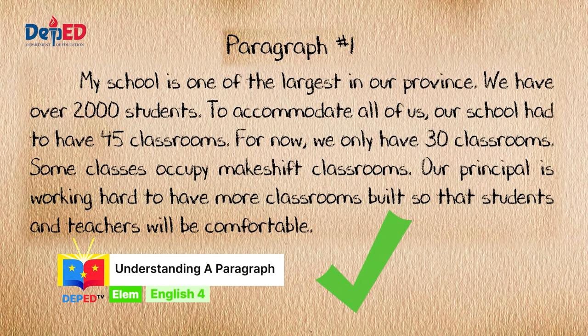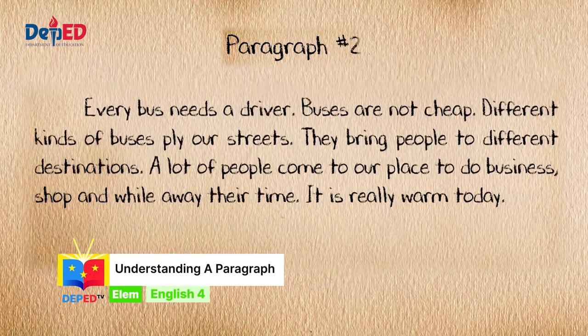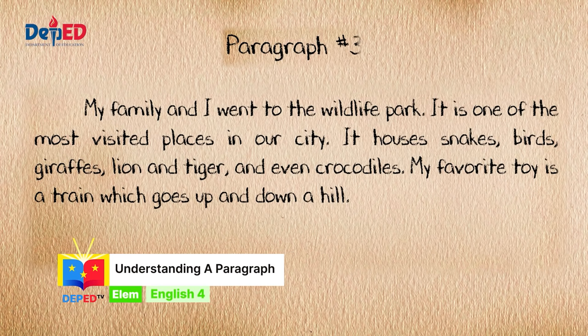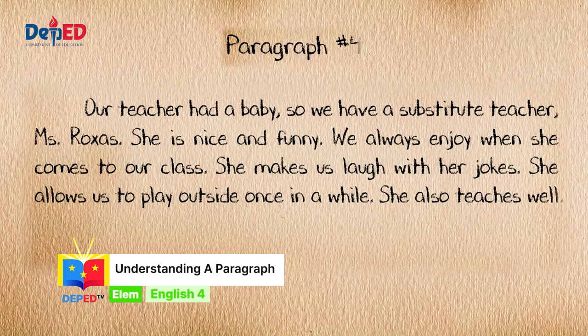For paragraph number one, if you wrote a checkmark, then you are right. Paragraph number one focuses on a single idea, which is about my school. For paragraph number two, if you wrote an X mark, then you are correct. Number two does not focus on a single idea. For paragraph number three, if you wrote an X mark, good job! And for the last paragraph, if you wrote a checkmark, then you are correct. Number four paragraph focuses on a single idea, which is about our substitute teacher.